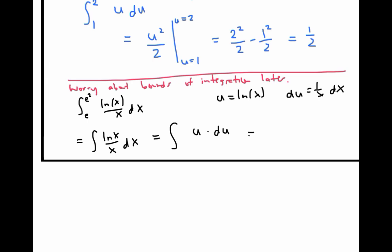We can evaluate that to get u²/2. Normally, we'd have a plus C constant. But since we're ultimately going to be doing a definite integral, we don't really need the constant here.